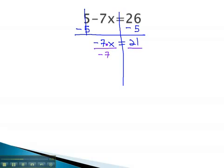Doing the same thing to the other side, and notice our negative 7's divide out. We're left with x equals 21 divided by negative 7 is negative 3.